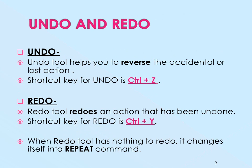Undo and redo tool. The undo tool helps you to reverse the accidental or last action. The shortcut key for undo is Ctrl+Z. Its icon is also present on the quick access toolbar, so we can use the menu also. Next is the redo tool. Redo means something like repeat — it redoes an action that has been undone.